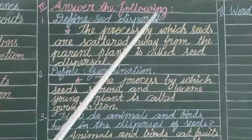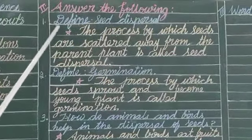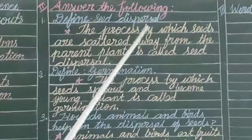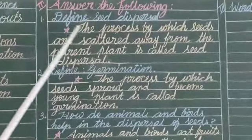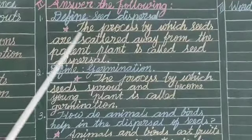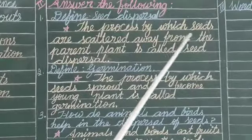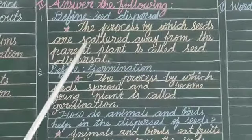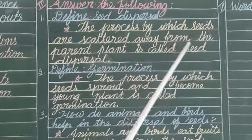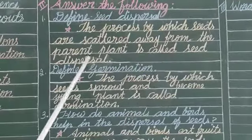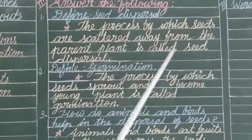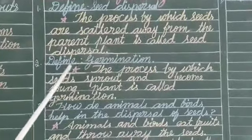Next, answer the following. Question 1: Define seed dispersal. The process by which seeds are scattered away from the parent plant is called seed dispersal.